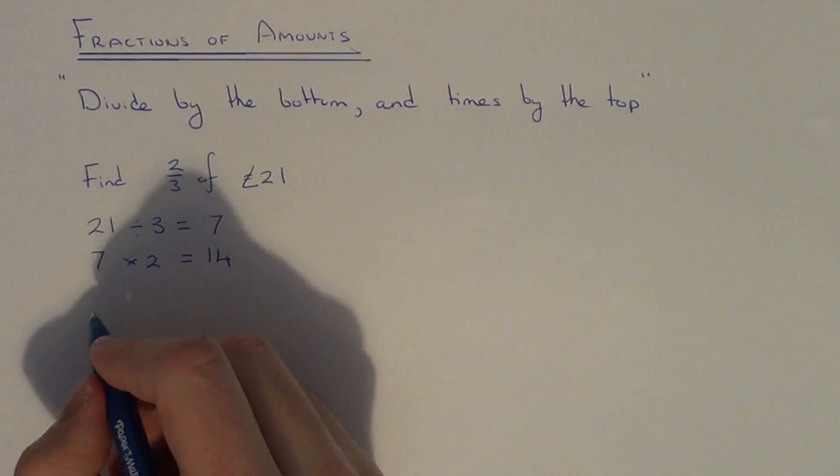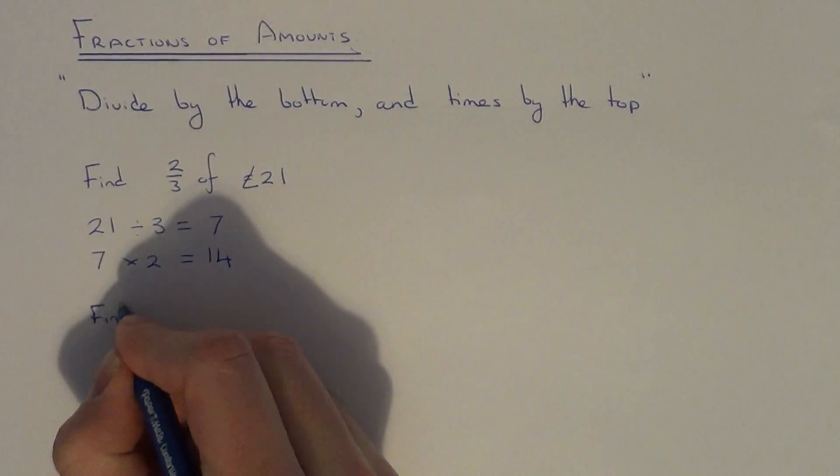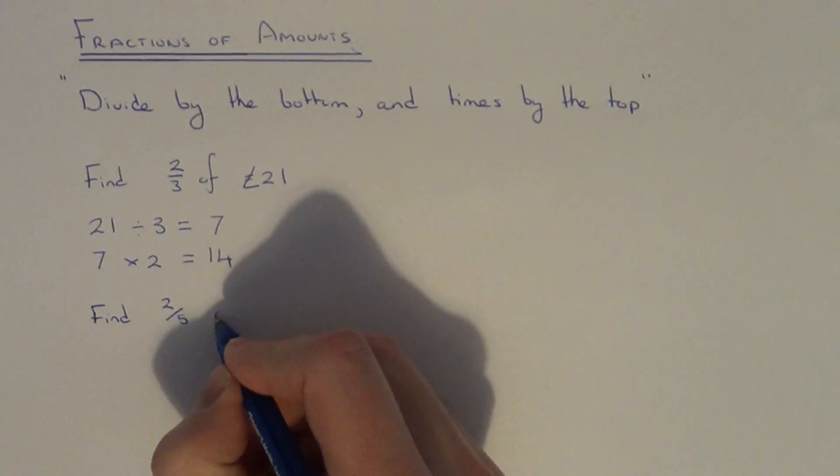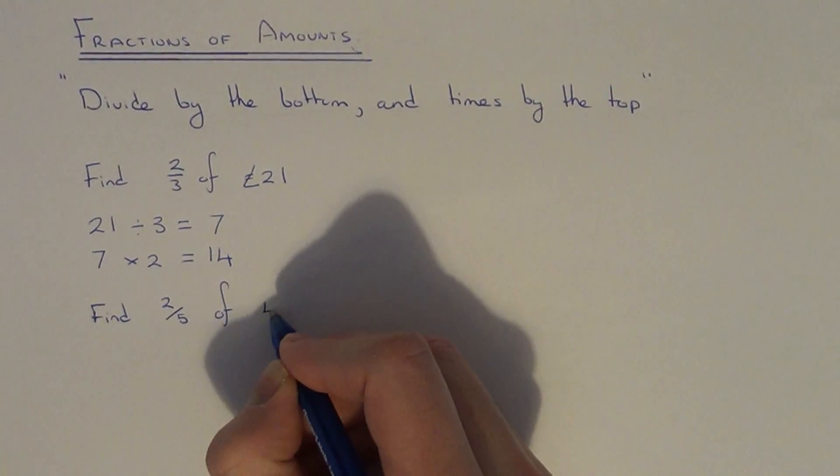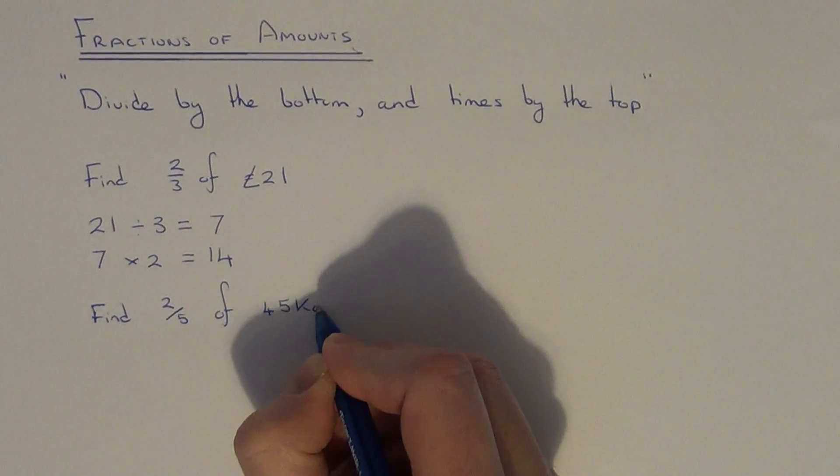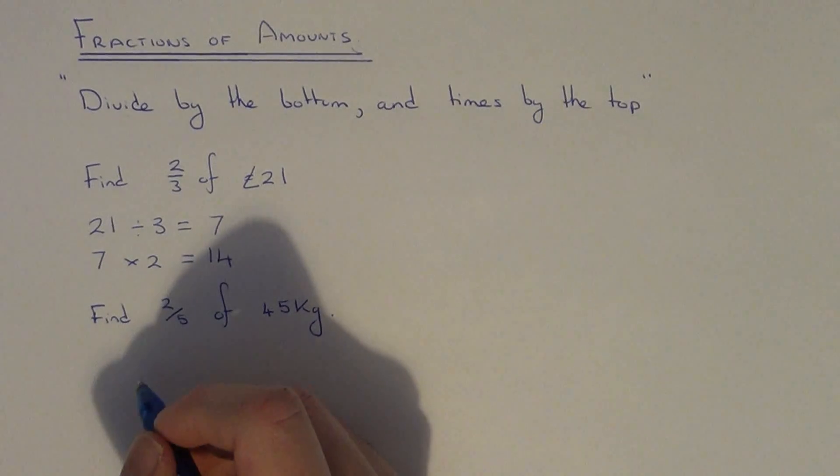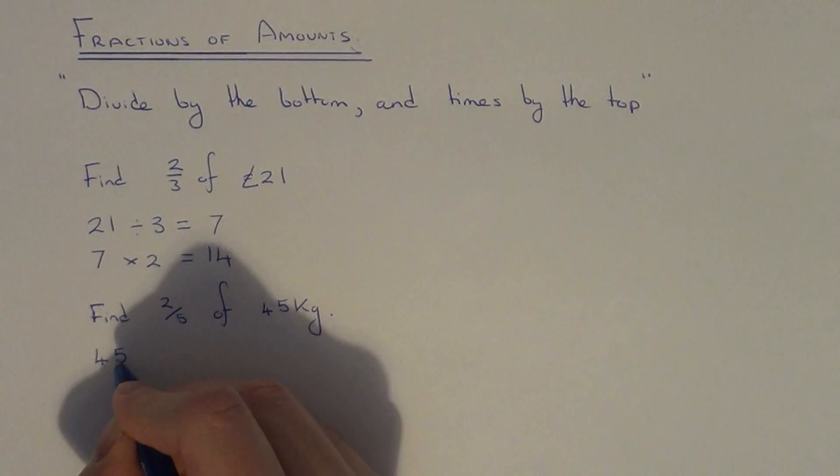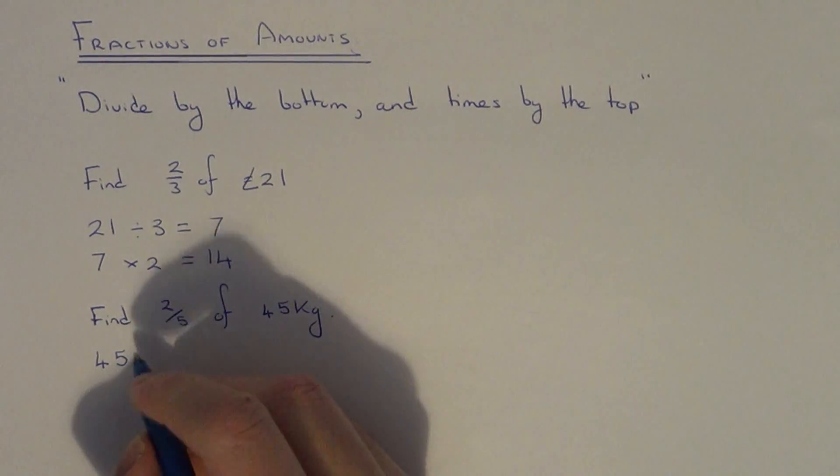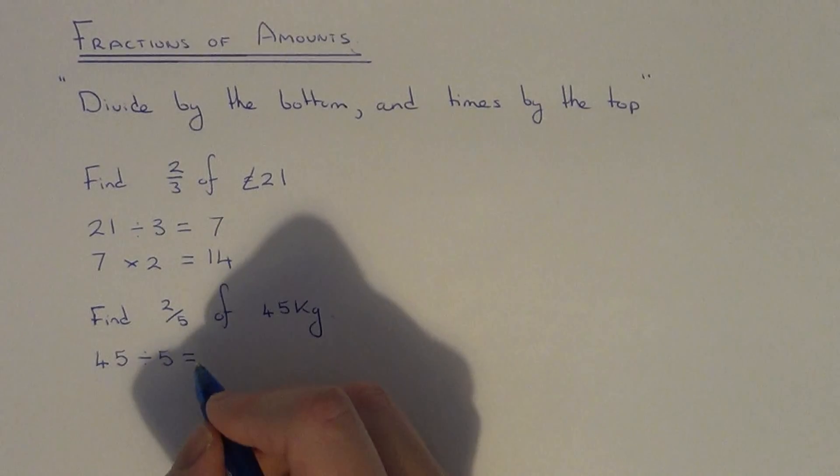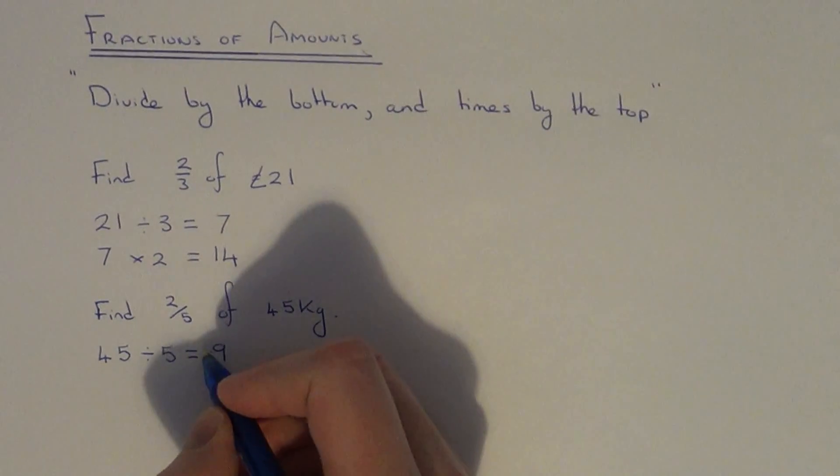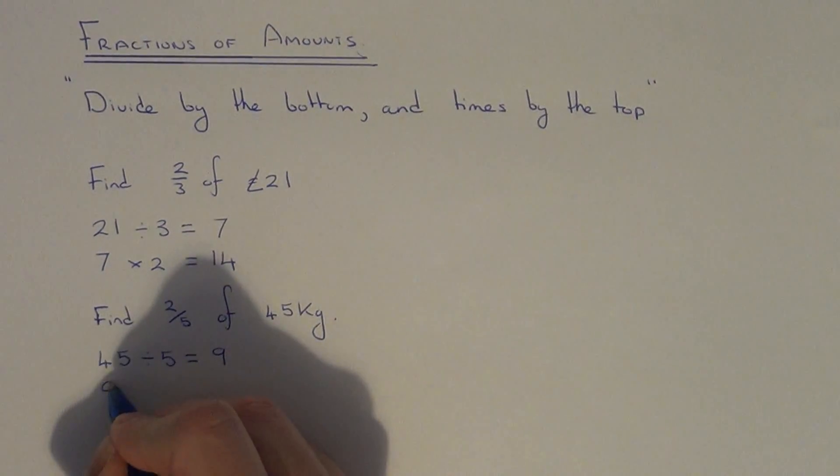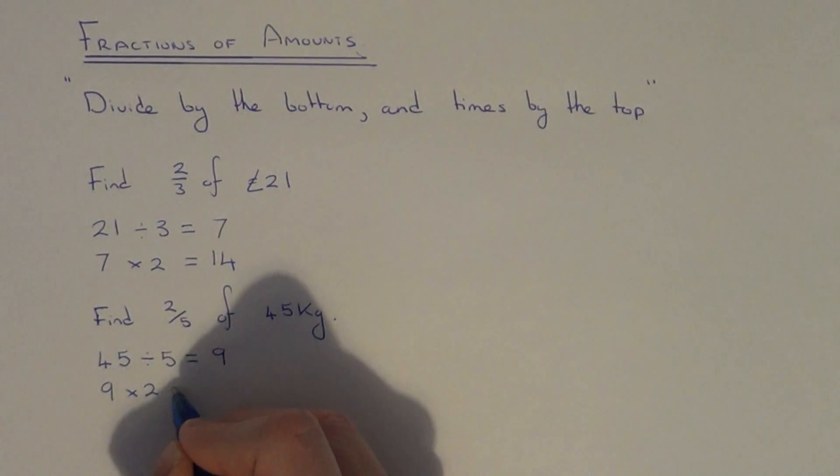Let's do another example. Find two fifths of forty five kilograms. So again let's apply the rule divide by the bottom and times by the top. Put your forty five on the next line, divided by the bottom number of the fraction which is five. Forty five divided by five is nine. Put this answer on the next line. Nine times two is eighteen.